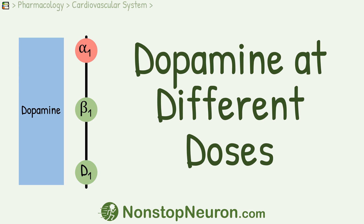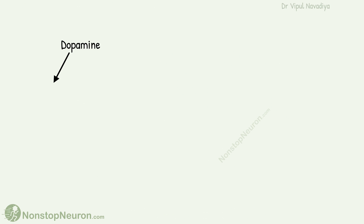In this video we will talk about the different effects of dopamine at different doses and what you should keep in mind when using dopamine for heart failure. Dopamine acts on multiple receptors: dopamine receptors D1 and D2, and adrenergic receptors beta-1 and alpha-1.